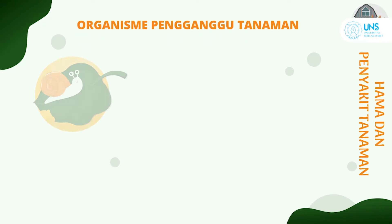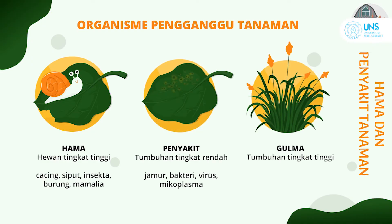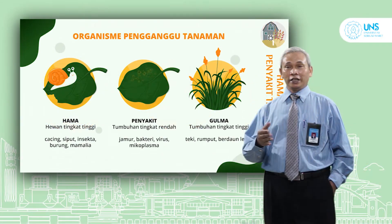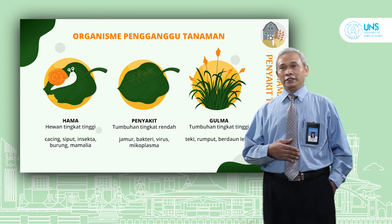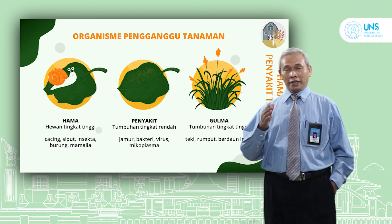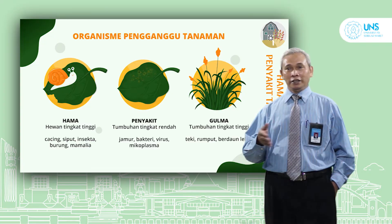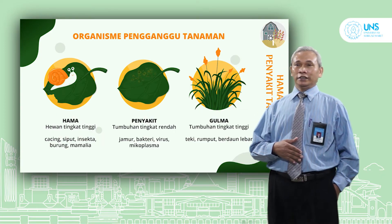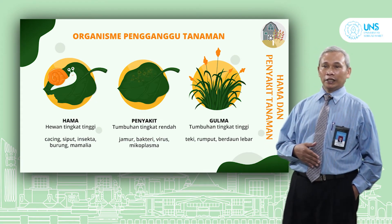Kemudian hama dan penyakit. Ini cukup penting, bagaimana supaya tanaman kita tidak terserang hama dan penyakit, apa saja yang menyerang, dan bagaimana cara mengendalikannya. Hama, penyakit, dan gulma merupakan tiga organisme yang menjadi bagian dari Organisme Pengganggu Tanaman atau OPT. Nanti masing-masing akan menjadi mata kuliah tersendiri yaitu hama tanaman, penyakit tanaman, dan gulma, yang akan kita pelajari secara detail pada semester yang akan datang.